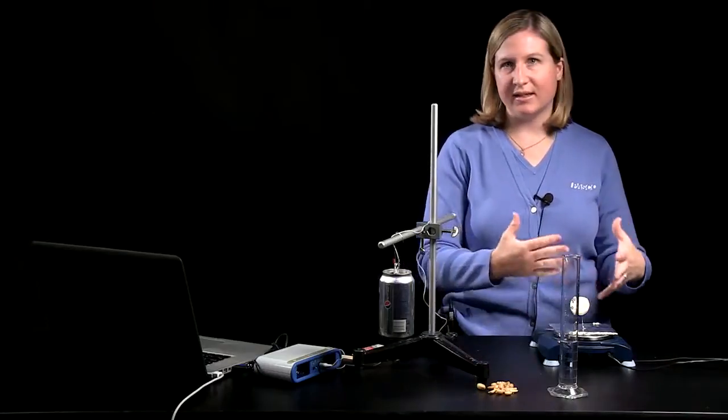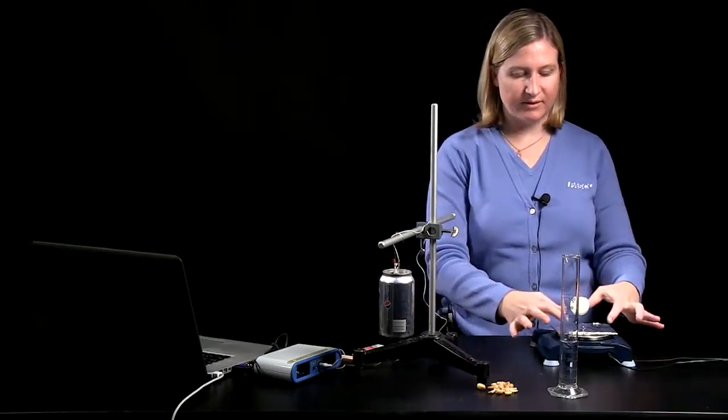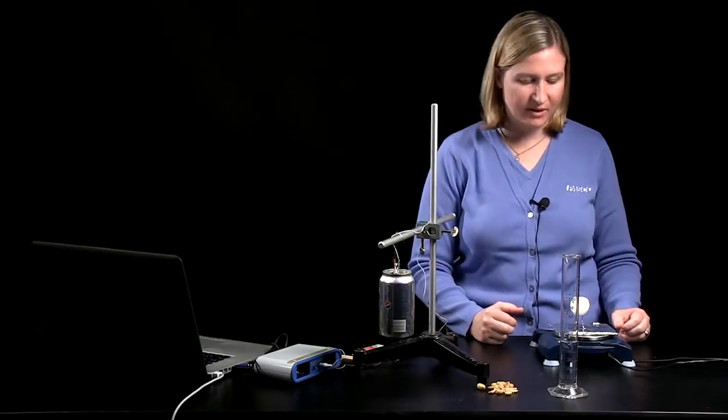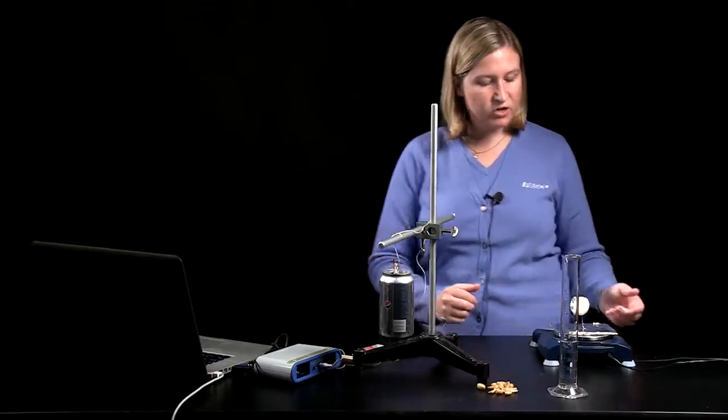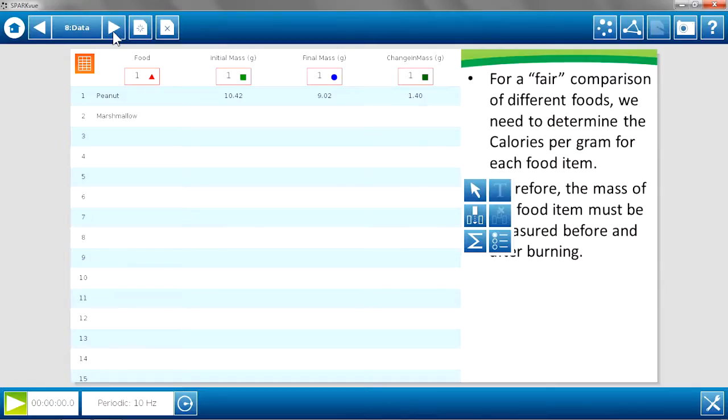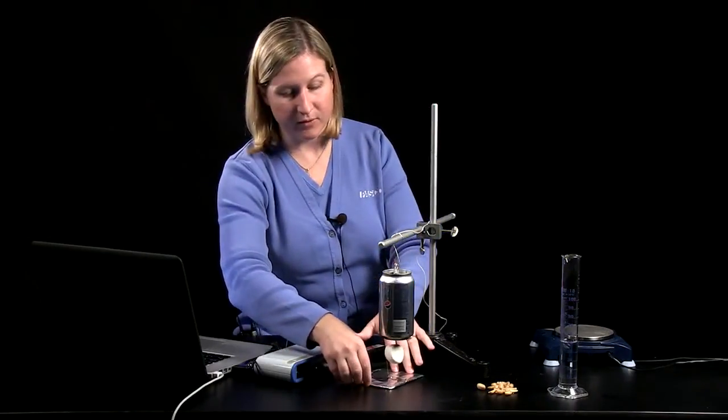When students get the initial mass of the food, it's important that they put the food and the holder all together on the balance. That way during burning anything that may fall off of the food is caught on the holder and can be counted for in mass. So my initial mass of the marshmallow and the holder is 14.44 grams. I'm going to type that into my data table. And I'll come back to this data table after I burn the food to get the final mass of the food.